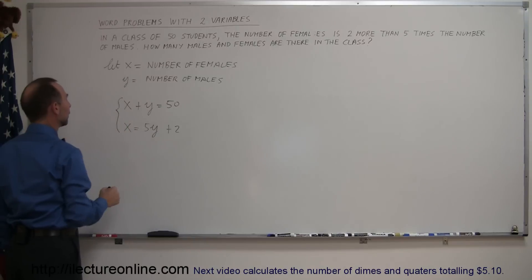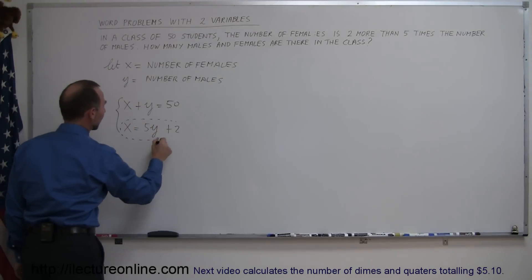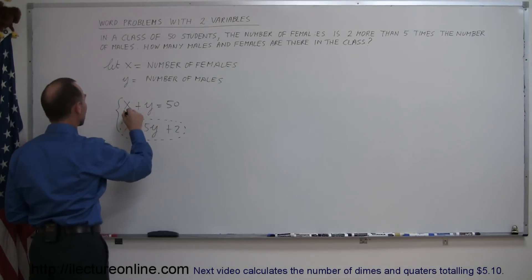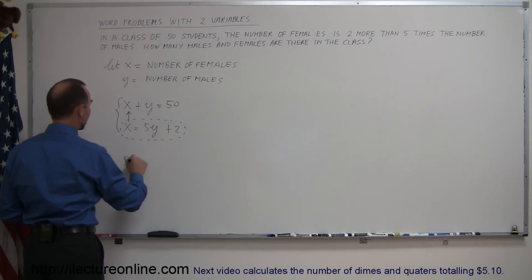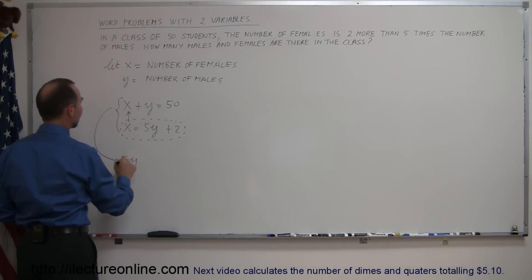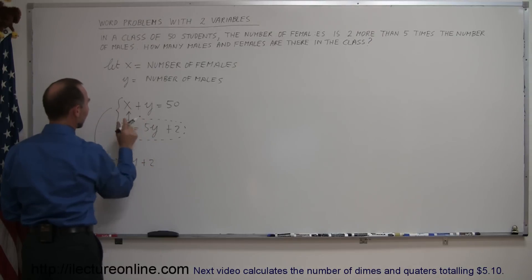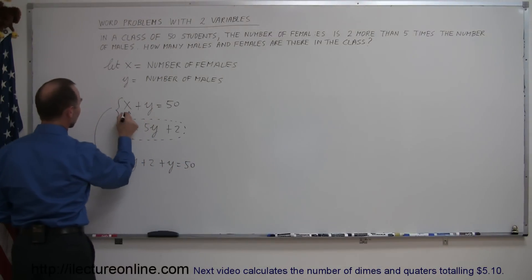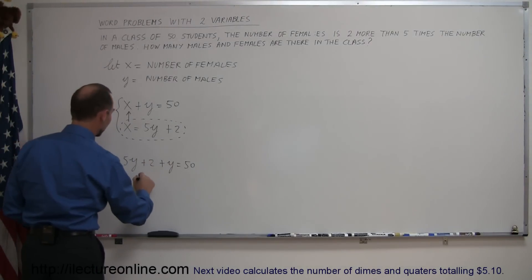We can use the second equation because it's already solved for x in terms of y. We substitute that into the first equation: instead of x, we write 5y plus 2, giving us (5y + 2) + y = 50. Notice that x has been replaced by 5y plus 2.